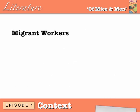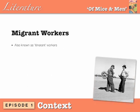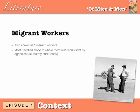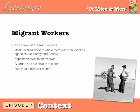The men who left their families behind to look for work were known as migrant or itinerant workers. The word itinerant means travelling and comes from Latin. Most migrant workers travelled alone to where there was work and were often sent to certain places by agencies like Murray and Reddy, who are mentioned in the novel. They were poorly paid — the ranch in the novel paying the average worker just 50 dollars a month, which is around 31 pounds by today's exchange rate.